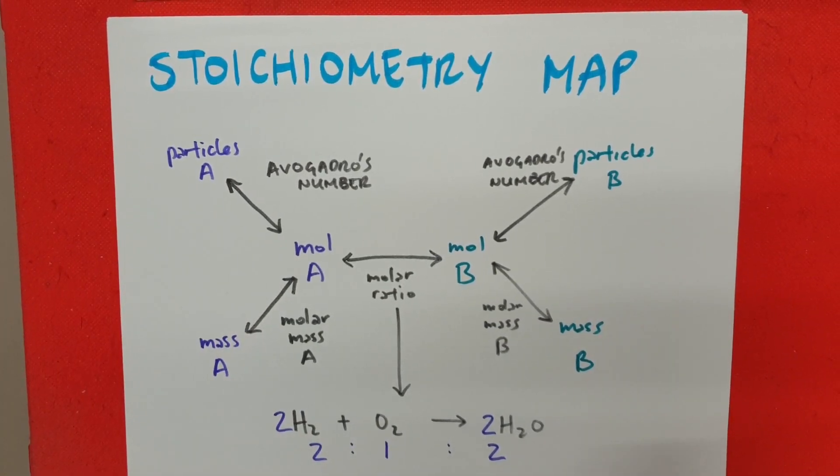So in this case, it's just easy to analyze. There are very few types of problems, really, in stoichiometry. Particles to moles, moles to particles, mass to moles, moles to mass of the same substance.